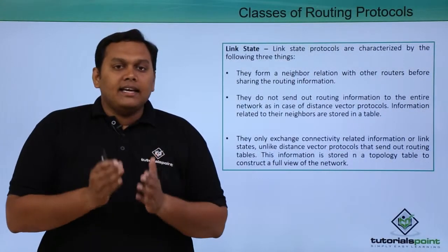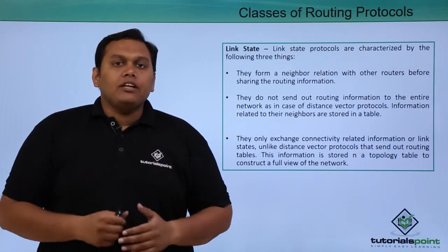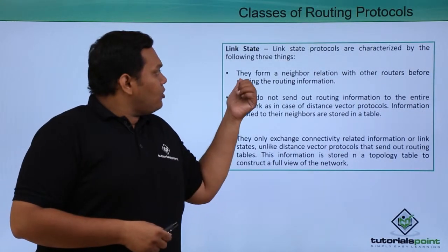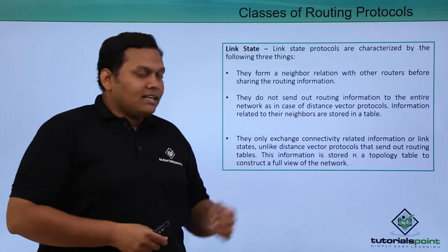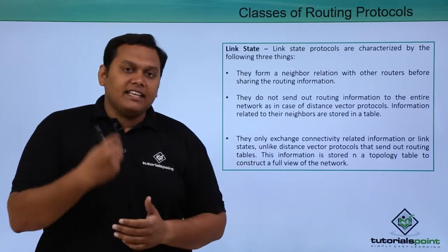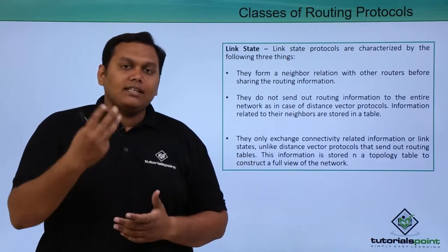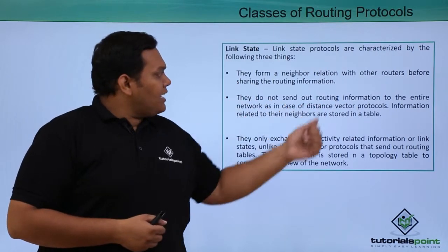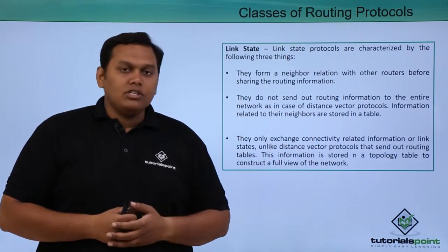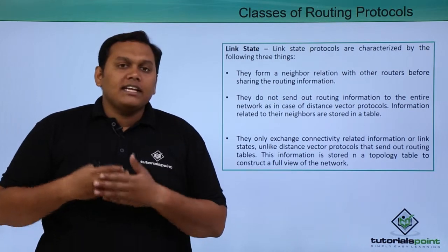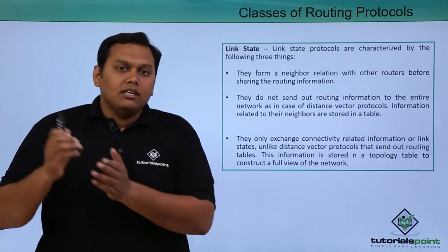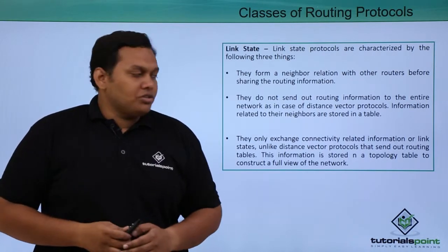The second class is link state protocol. Link state protocols are characterized by three things. First, they form a neighbor relationship with routers before sending routing information to neighboring routers.